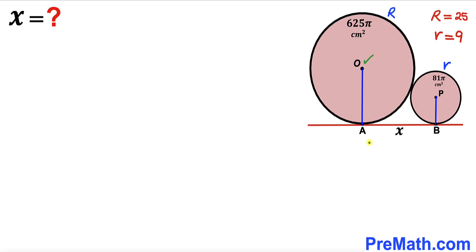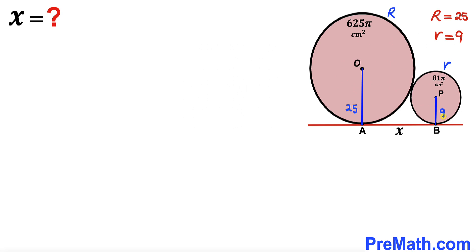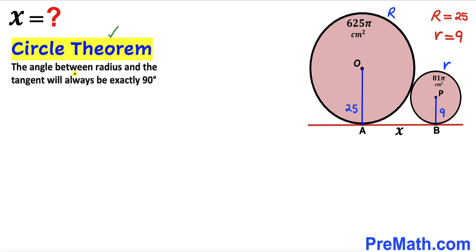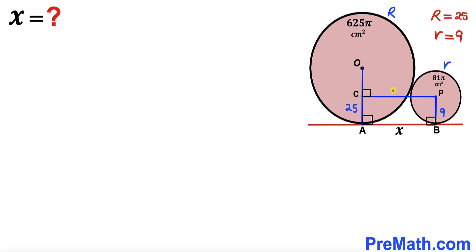Next, I've connected center O to the point of tangency A, and center P to the point of tangency B. OA is the radius of the larger circle, so OA = 25 cm, and PB is the radius of the smaller circle, so PB = 9 cm. By the circle theorem, the angle between a radius and a tangent line is always 90°, so both these angles are 90°.